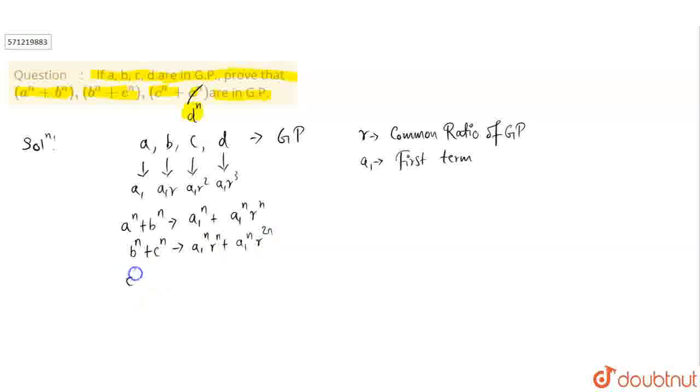C power N plus D power N can be written as A1 power N R power 2N plus A1 power N R power 3N.